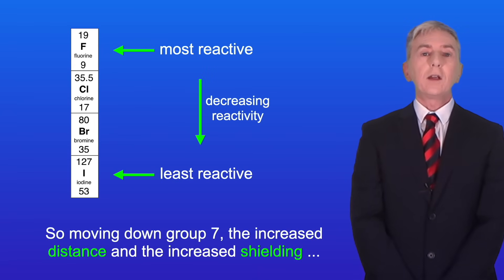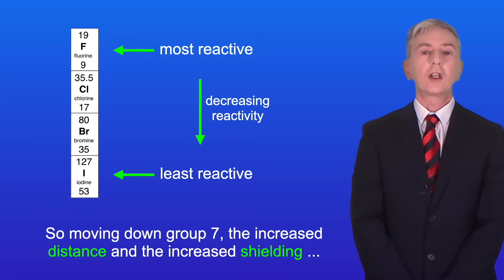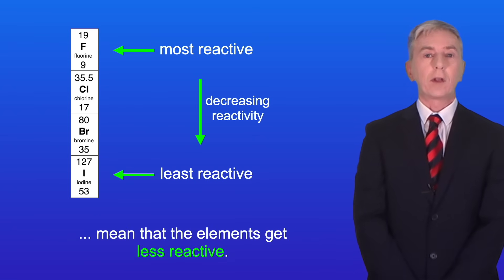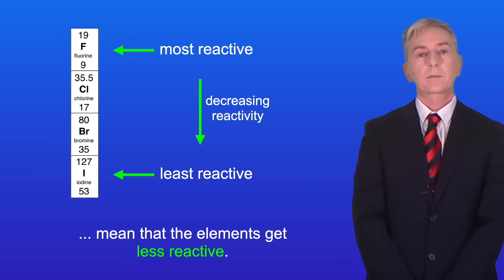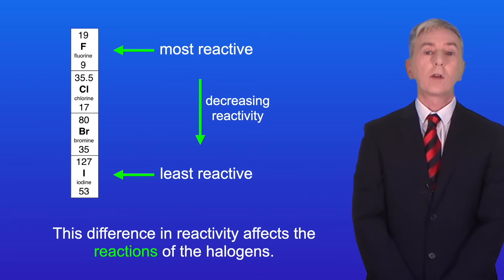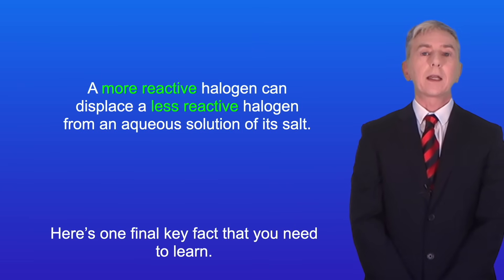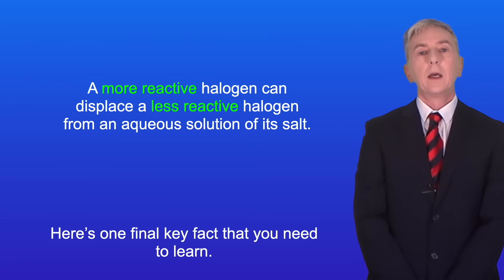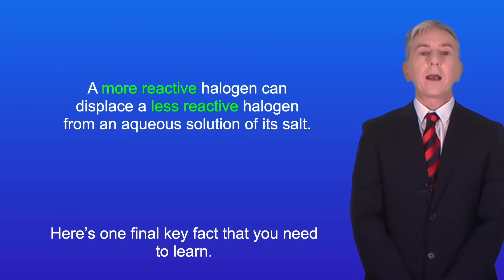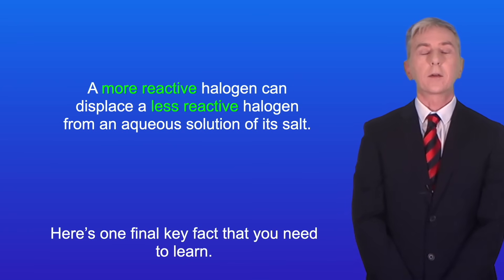Moving down Group 7, the increased distance and the increased shielding mean that the elements get less reactive. This difference in reactivity affects the reactions of the halogens. Here's one final key fact that you need to learn: a more reactive halogen can displace a less reactive halogen from an aqueous solution of its salt.